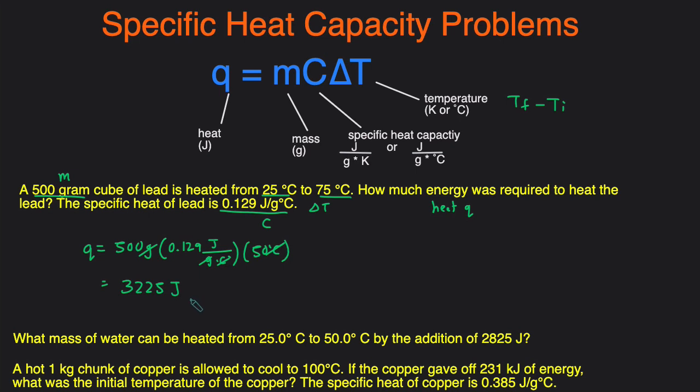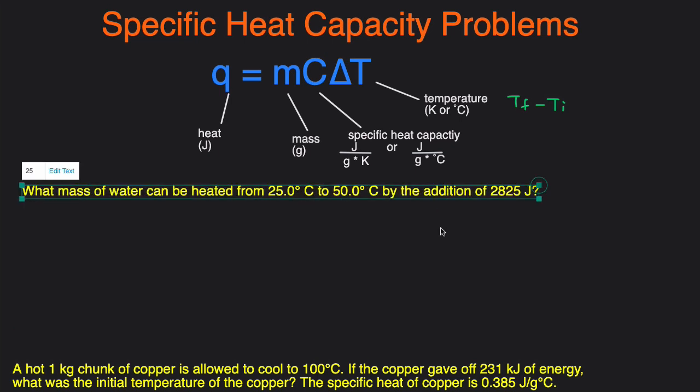If you want to convert that to kilojoules you would just divide by 1,000 and get 3.225 kilojoules. Next question.